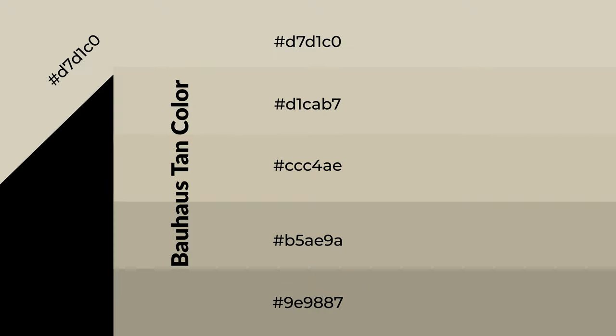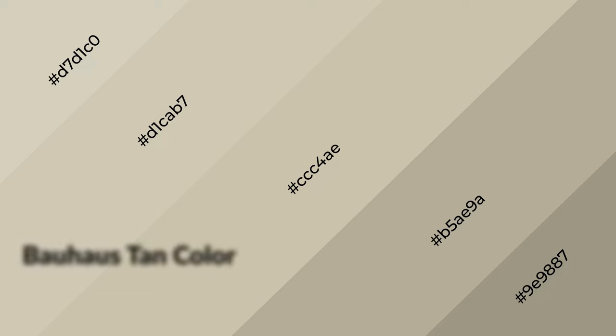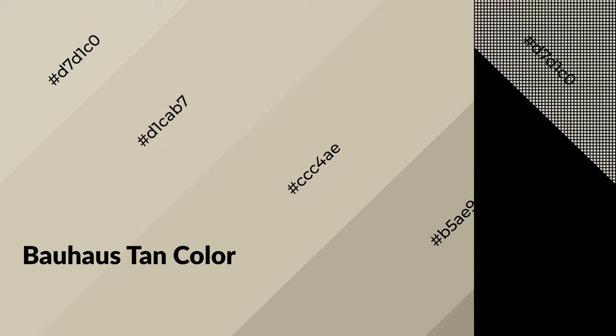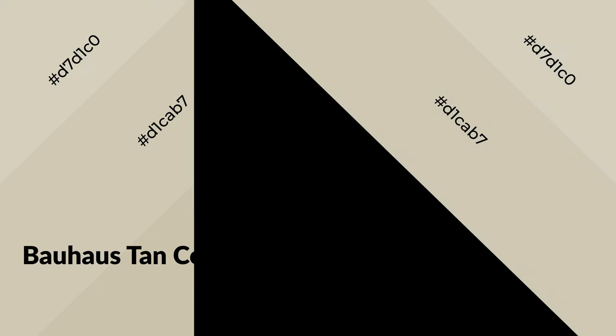To generate shades of a color, we add black to the color. It is used in patterns, 3D effects, and layers. Shades create depth and drama. Bauhaus tan is a warm color and it emits cozier and active emotion.